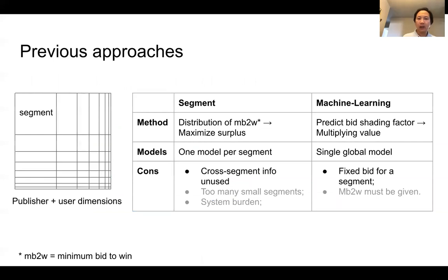In the past, there have been two categories of approaches. When an ad opportunity is announced, all the bidders know the information about the publisher and the user dimension. Of course, each bidder knows some extra information about them.